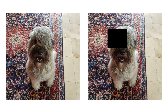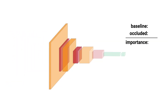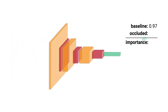For example, we have occluded the image of a dog with a black occlusion patch. Suppose we feed both of these images into a model to get a predicted probability for the dog class. The prediction on the original image is referred to as the baseline. If the probability corresponding to the occluded image drops significantly when compared to the baseline, then we can say that that occluded region is important to the prediction.